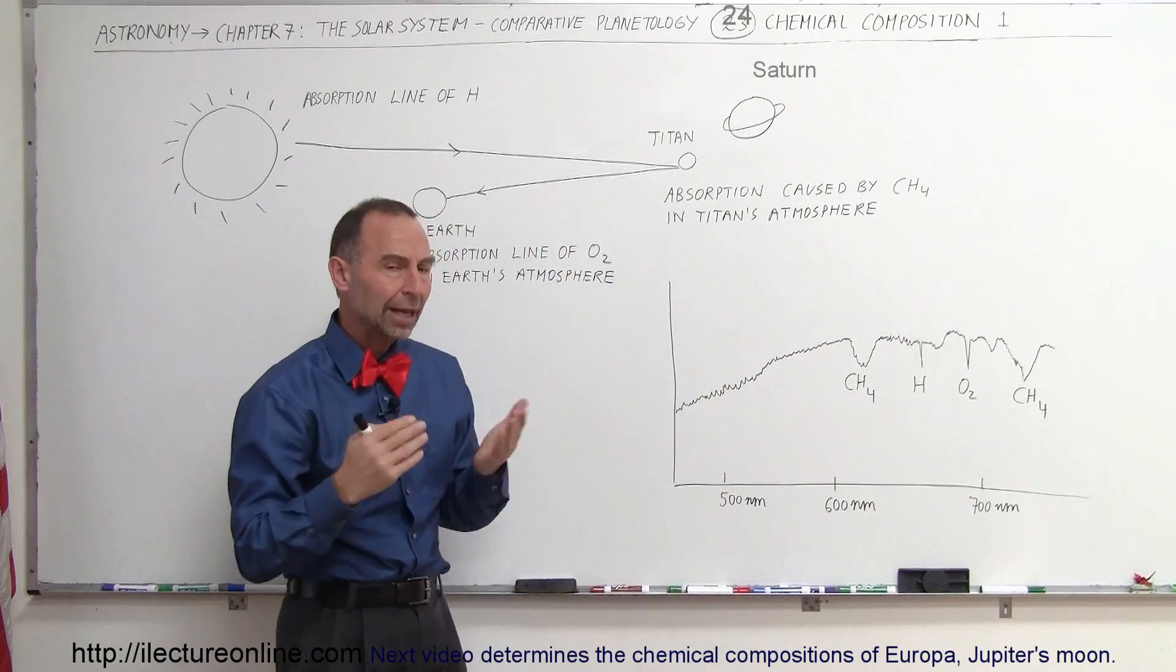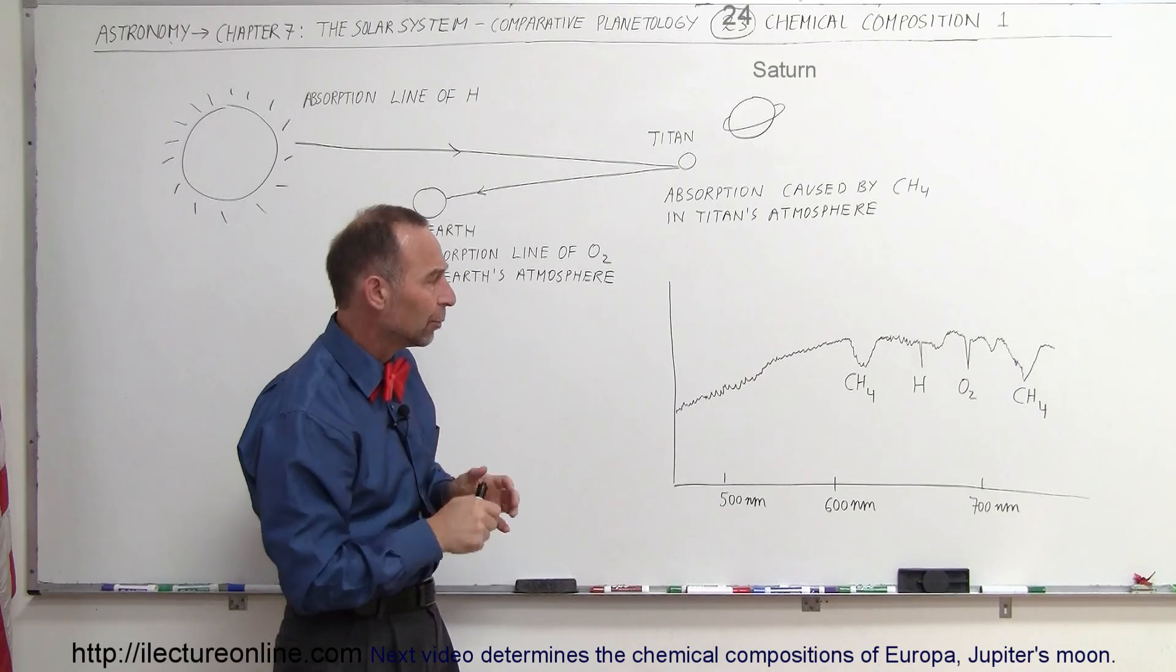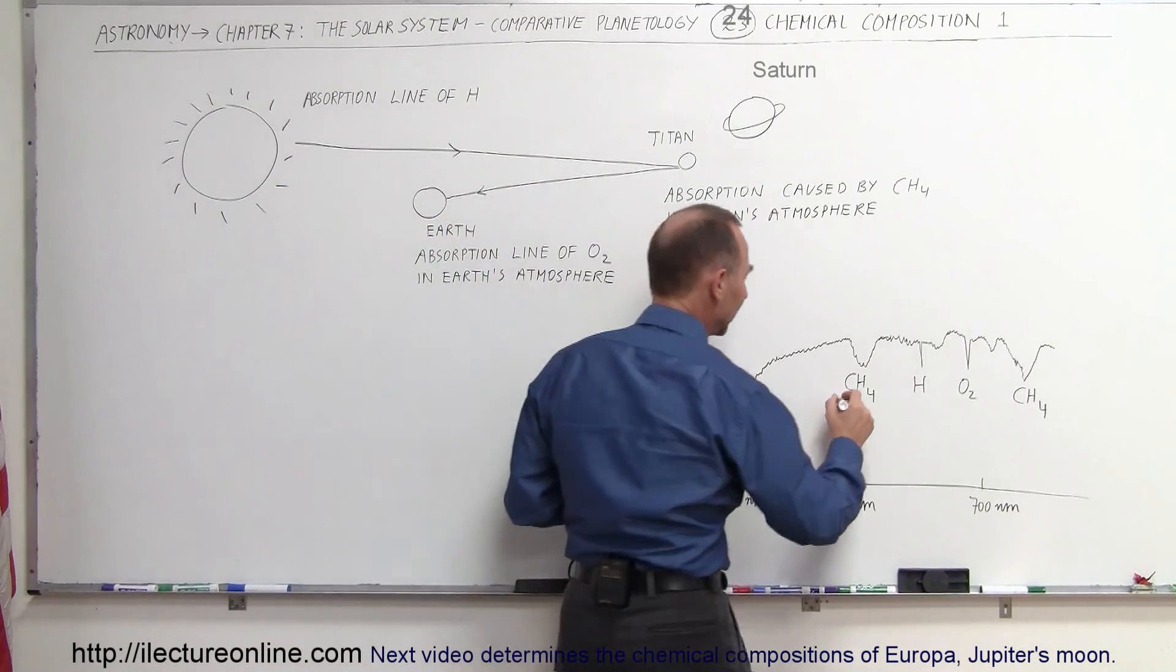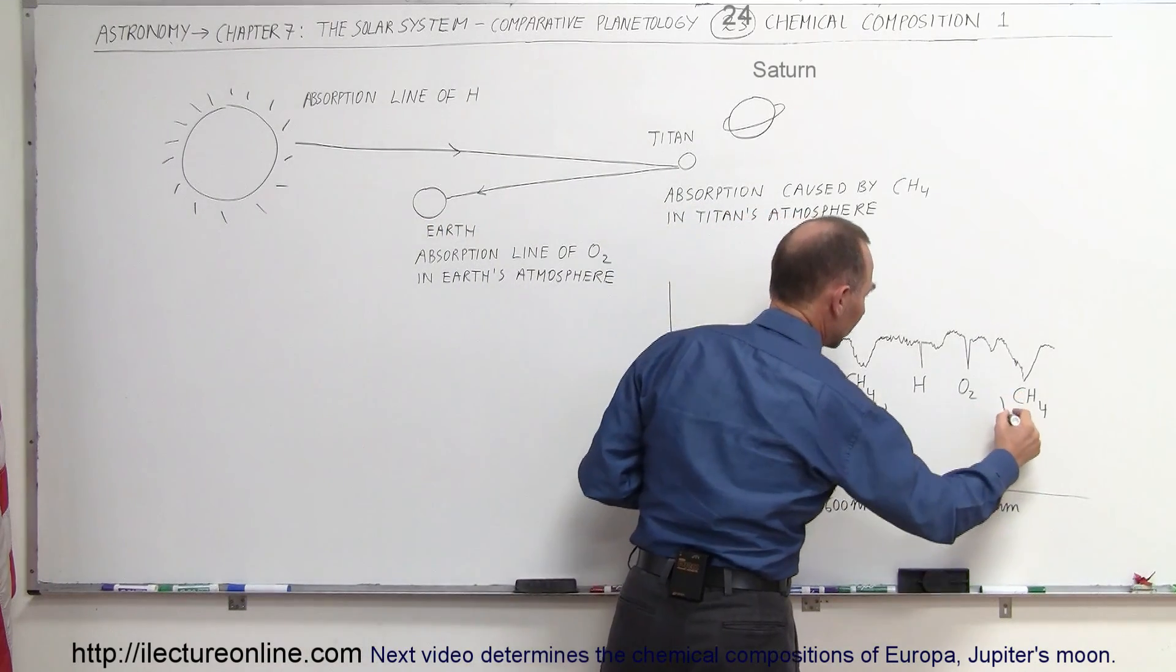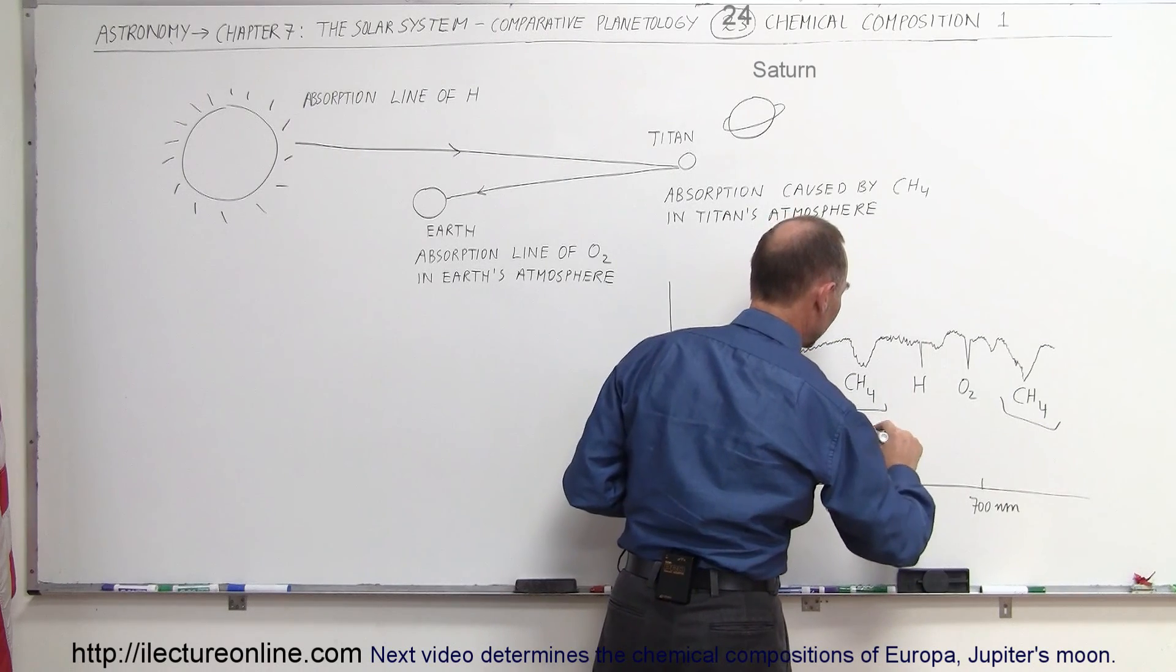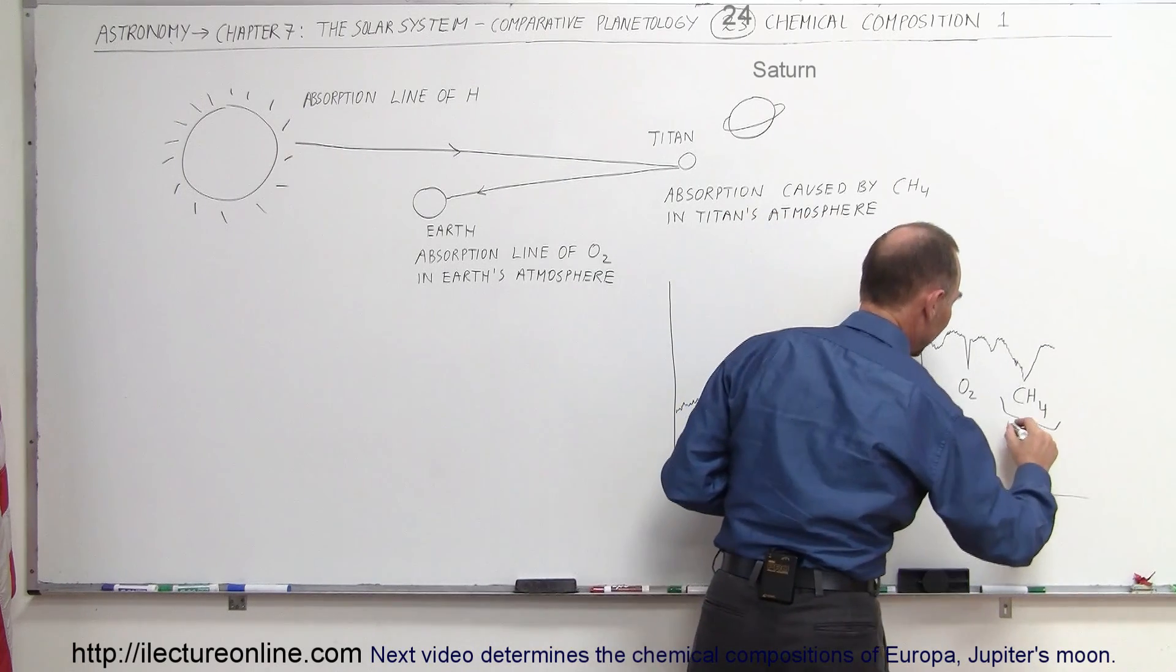So this is what we get back, that's what we analyze, and so we have to then realize that this here came from Titan. So we have confirmation that there is methane in the atmosphere of Titan.